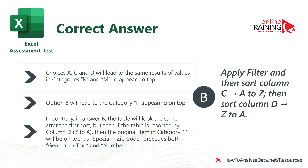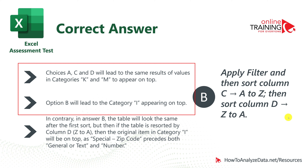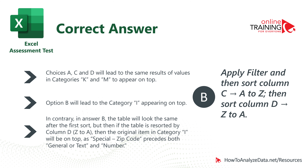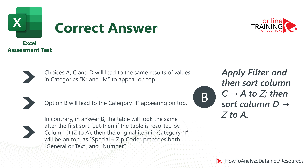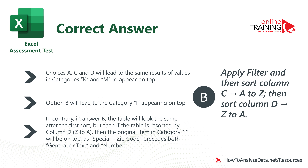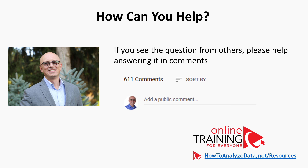Choices A, C, and D lead to the same results with the required values appearing on top. Choice B is the correct choice because it does not reach the same results — it applies one sorting on top of another. If you didn't get this right, know that it's a very tough question. A good recommendation is to get a good night's sleep and schedule your Excel test in the morning so you have a fresh mind to catch the tricks test creators put into questions. Help others by posting answers in the comments.